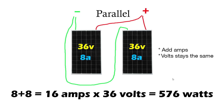You have two options for wiring your solar panels: parallel and series. When you wire in parallel, you're running a negative to the other negative and a positive to the other positive. When you do this, you add your amps but your voltage stays the same. So if you have a solar panel that is 36 volts at 8 amps, in parallel you'd add 8 plus 8 equals 16 amps, times 36 volts — that equals 576 watts.